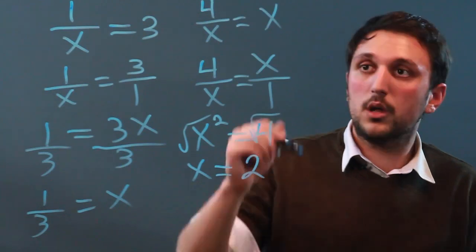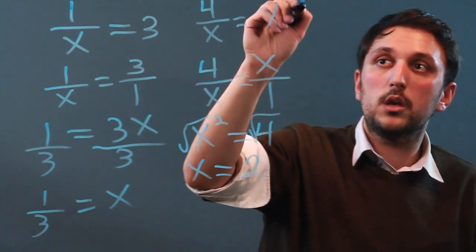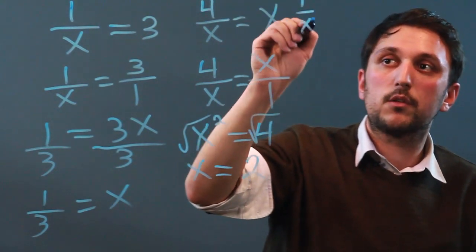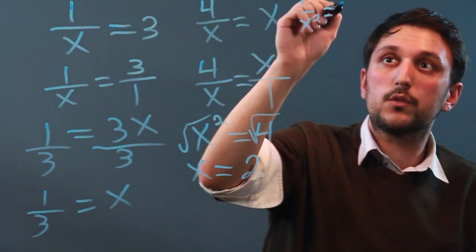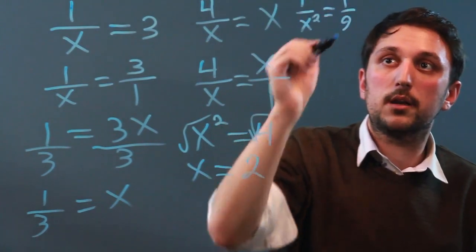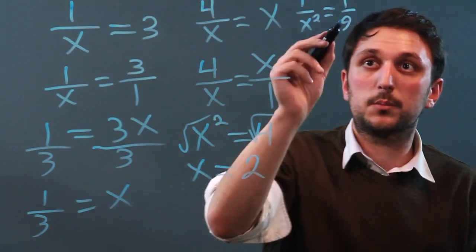And then the last one would be, what if we had 1 over x squared equals 1 over 9? Well, now we have our fractions, so we just cross multiply.